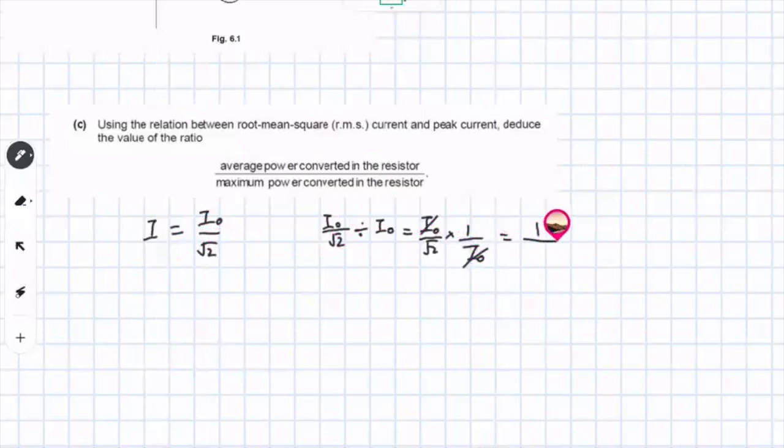Is it 1 over root 2? For I, correct? Yeah. But they ask for power. Oh. Yes, try.